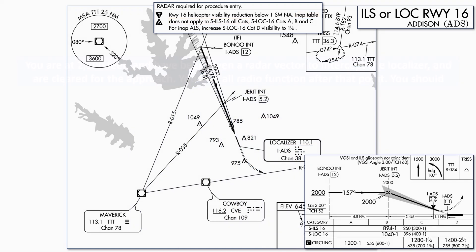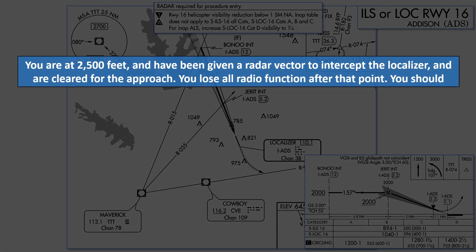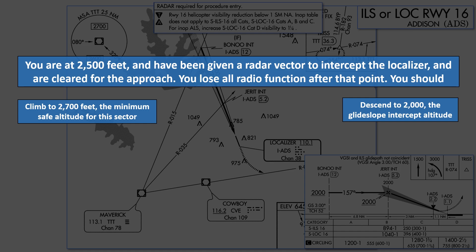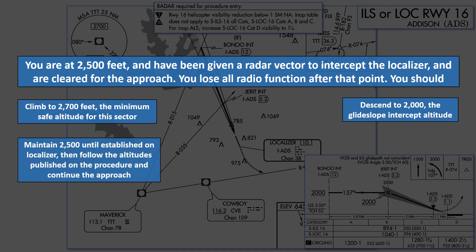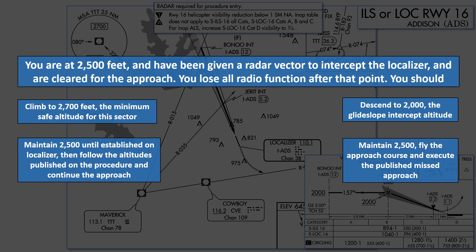Question 4: You're at 2,500 feet and have been given a radar vector to intercept the localizer and are cleared for the approach. You lose all radio function after that point. Should you climb to 2,700 — the minimum safe altitude for this sector — descend to 2,000 (the glide slope intercept altitude), maintain 2,500 until established then follow the altitudes published on the procedure, or maintain 2,500, fly the approach course, and execute the published missed approach?